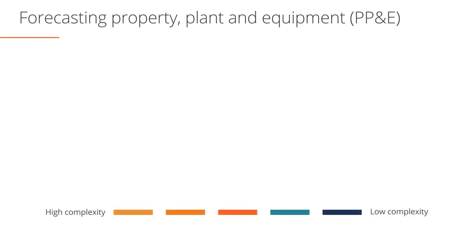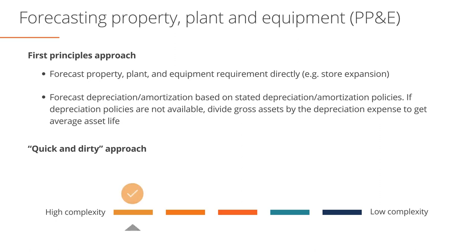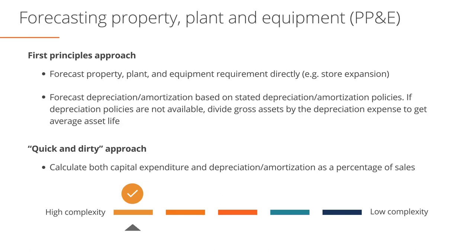But before we begin to forecast, there are the same two approaches to consider here, as were explained in the first module: the first principles approach and the quick and dirty approach. Applying the first principles approach identifies how you would go about modeling PP&E if you need a high degree of detail and precision. The quick and dirty approach outlines how you can model property, plant, and equipment in a much more straightforward way, with the benefit that your model will be smaller as well as easier to follow and audit. The other benefit of using the quick and dirty approach is that linking PP&E to revenues ensures that as revenues grow, PP&E also grows.